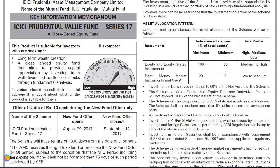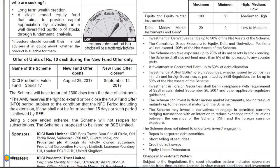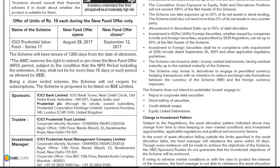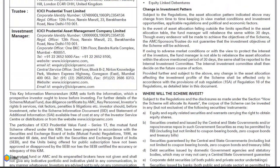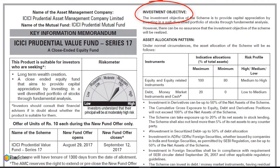As this is a close-ended fund, it has a fixed tenure of 1,300 days from the date of allotment. You can see the constituents of the fund — the sponsors, trustee, and investment manager. Other details available in the KIM are the investment objective for the NFO and the asset allocation pattern.